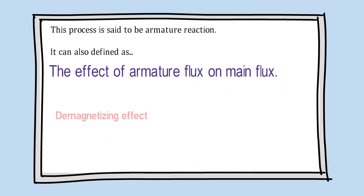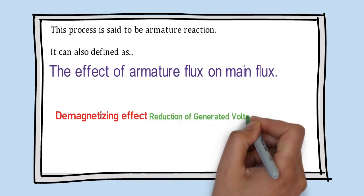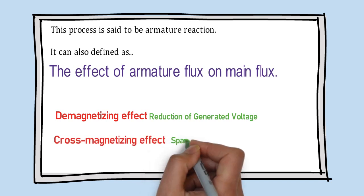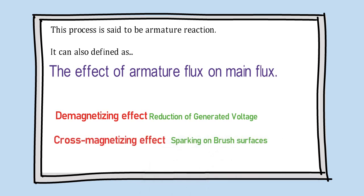First is demagnetizing effect, which will reduce generated voltage. Second is cross-magnetizing effect. It may lead towards sparking on brush surface.